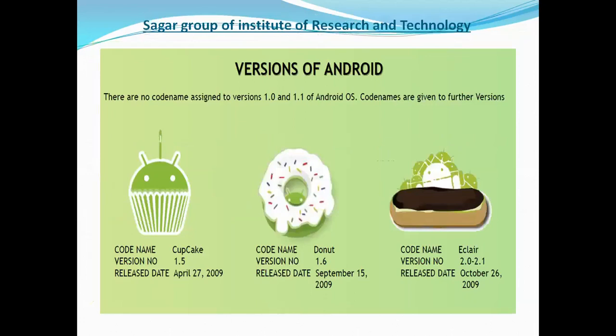On the next slide, we can see the versions of Android. From the first version, Android versions were updated turn by turn, year by year. The versions are always alphabetically released. The first version is called Cupcake, the second is Donut, and the third is Eclair.